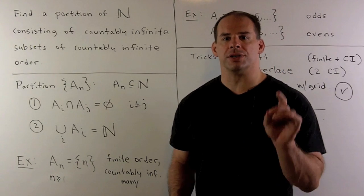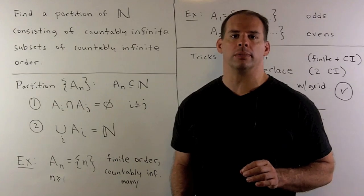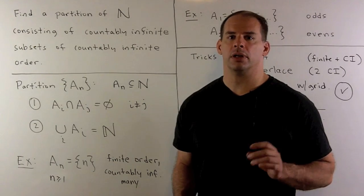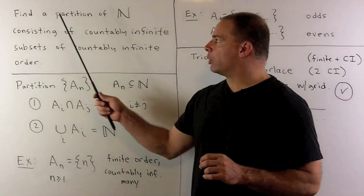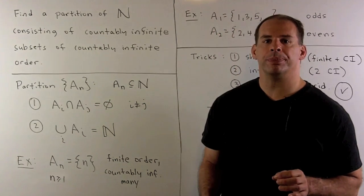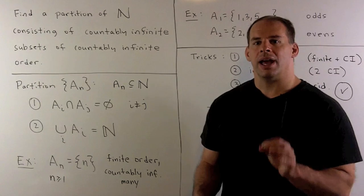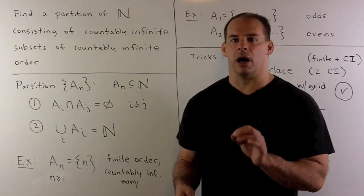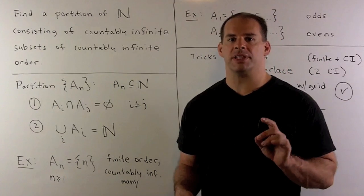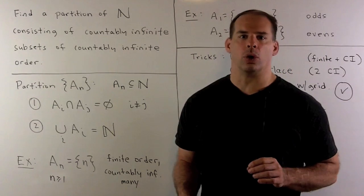Here's a problem on sets of countably infinite order. I want to find a partition of the natural numbers consisting of a countably infinite number of subsets, each of countably infinite order.